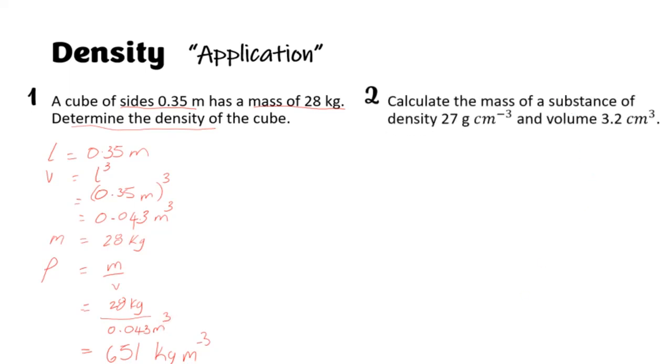So let's get to question two. Question two says: Calculate the mass of a substance of density 27 g/cm³ and volume 3.2 cm³. Now for this one, it requires a little bit of transposition because we're required to find the mass. We got density and volume, so again, first thing you need to do: record what you have in the question.